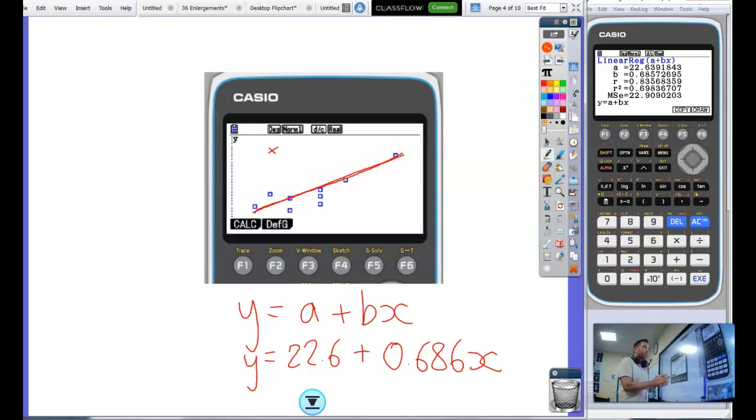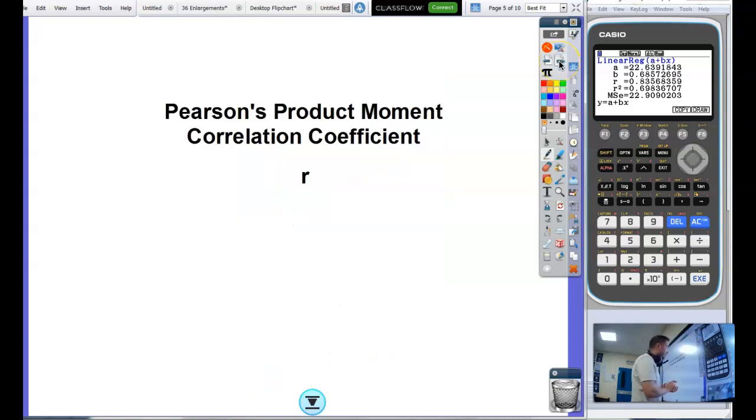Then we're going to have a look at this r. Now r, we're told it's zero point eight three five something. What does that mean? Well I need to teach you a little bit about this thing: Pearson's product moment correlation coefficient. It's a bit of a mouthful, which is why we write it as just r. Pearson's product moment correlation coefficient. What is it? This tells us how strong the link is between two variables, tells us how strong a correlation there is between our two variables, our goals for and our points.